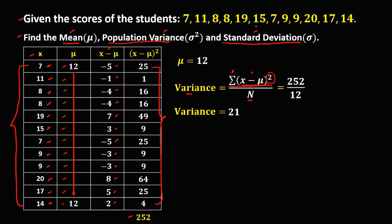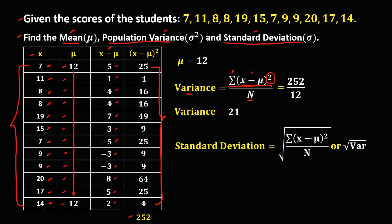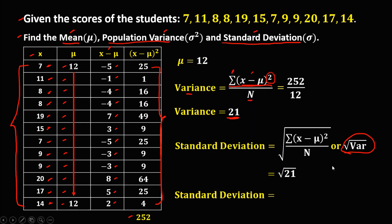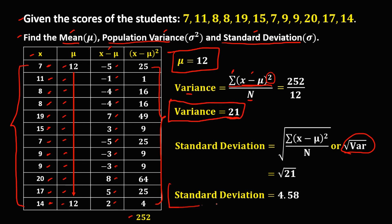For the standard deviation, we take the square root of the variance. So the standard deviation equals the square root of 21, which equals 4.58. In summary: the mean is 12, the variance is 21, and the standard deviation is 4.58.